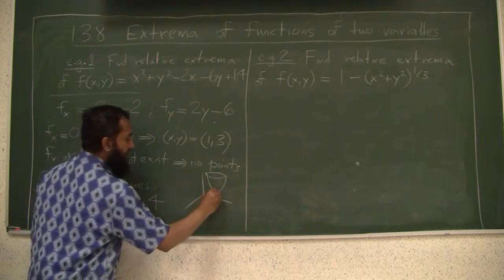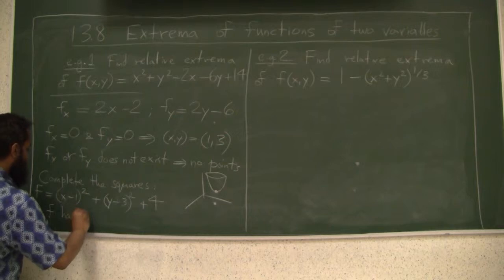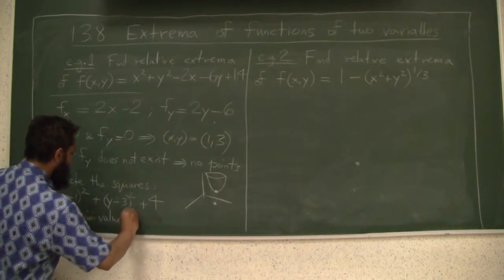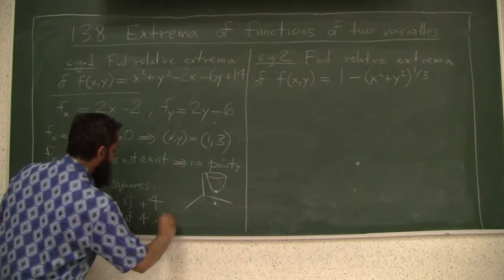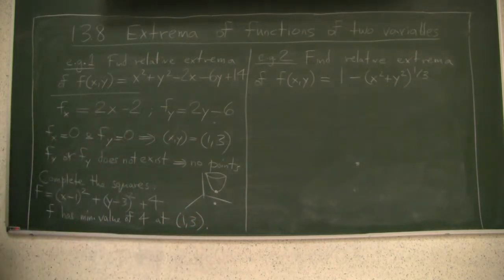So obviously at 1, 3, we will say f has minimum value of 4 at 1, 3. That completes this example.